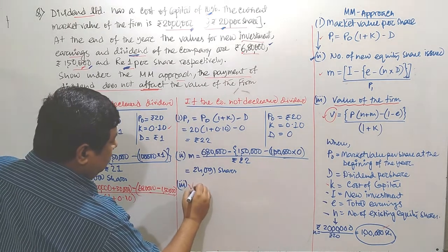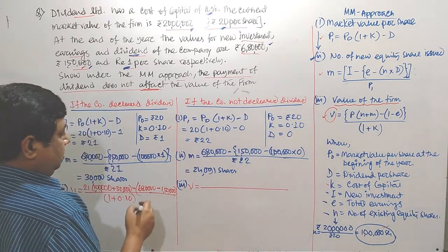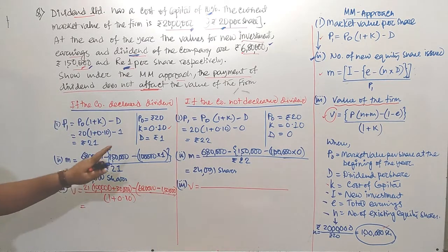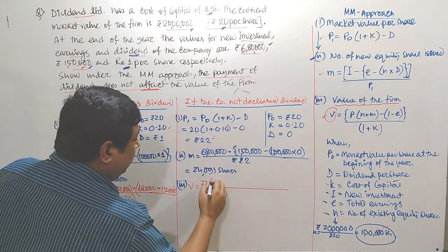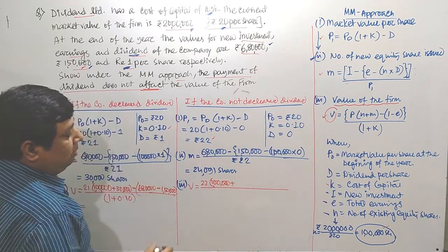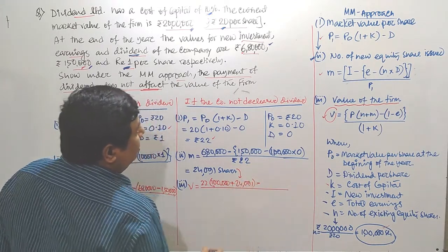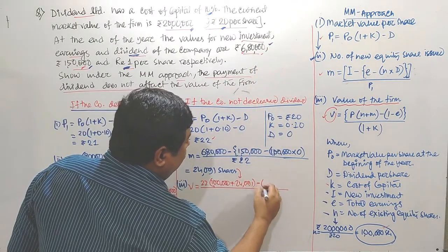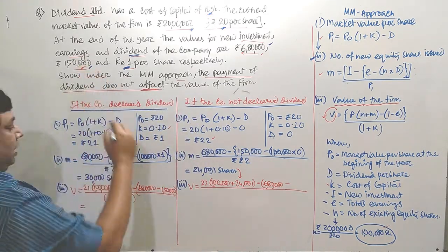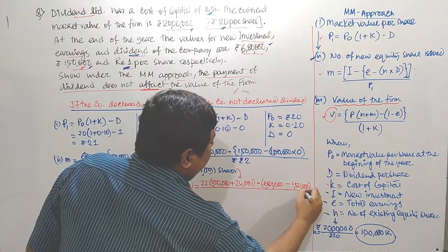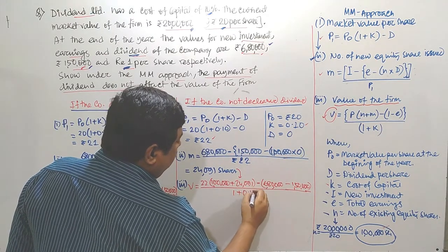For case 2 (no dividend): V = 22 × (1,00,000 + 24,091) − 6,80,000 + 1,50,000, divided by (1 + 0.10).